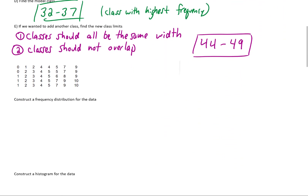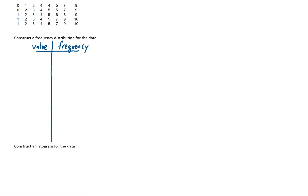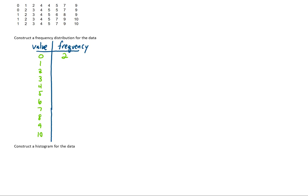Let's move on to the next problem. Here we have a bunch of data, and we need to quickly construct a frequency distribution. Taking a quick look at our data, we have values from 0 to 10. In the frequency column, we write down how many times each value appears. The value 0 appears twice, the value 1 appears 4 times, the value 2 appears 5 times, the value 3 appears 4 times, and so on until we finish the table.